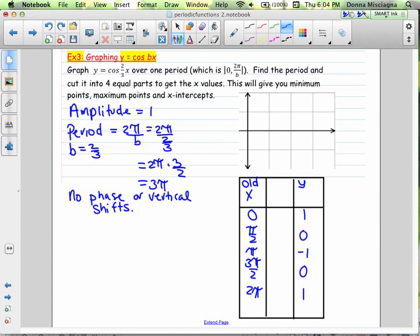Now those y values are not going to change. The only thing that changes y values are amplitude changes and vertical shifts. And we have no amplitude changes and no vertical shifts in this graph. The only thing that's going to change are x values, and that's because there is a period change. So this is going to be the new x.